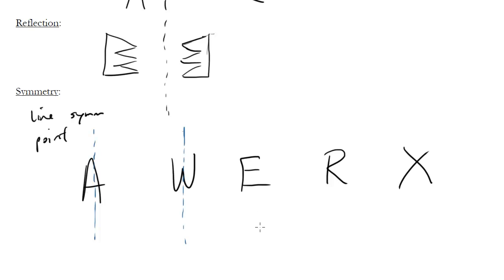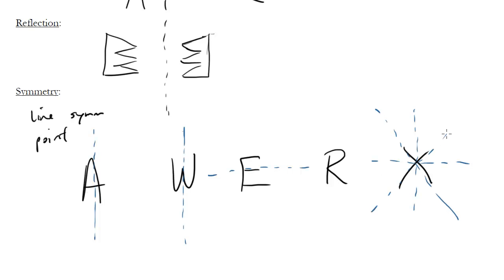E doesn't have a vertical line of symmetry, but it does have a horizontal line of symmetry — I can fold it over this line and it looks the same. R, on the other hand, has no symmetry whatsoever. Whereas X has a vertical line of symmetry, a horizontal line of symmetry, two diagonal lines of symmetry, and also point symmetry, because I can rotate X 180 degrees and it looks the same. So X is a highly symmetrical object, whereas R is not. That's the basics about symmetry and geometric transformations.